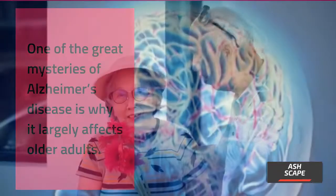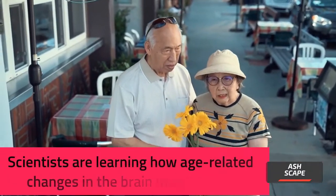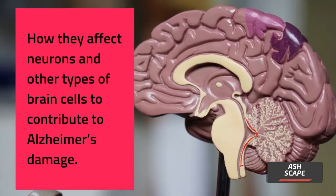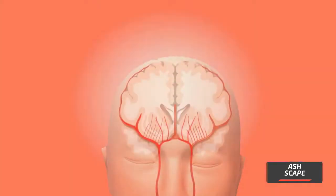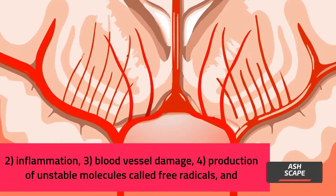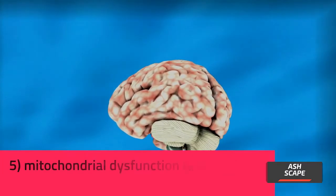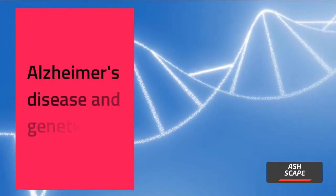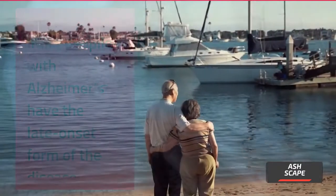One of the great mysteries of Alzheimer's disease is why it largely affects older adults. Scientists are learning how age-related changes in the brain may harm neurons and other types of brain cells to contribute to Alzheimer's damage. These age-related changes include: (1) atrophy, the shrinking of certain parts of the brain; (2) inflammation; (3) blood vessel damage; (4) production of unstable molecules called free radicals; and (5) mitochondrial dysfunction, a breakdown of energy production within a cell.